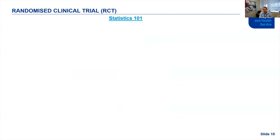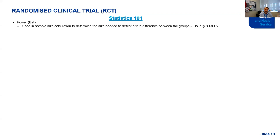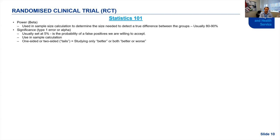Moving briefly to statistics 101, because RCTs often present a plethora of different statistics and it's important for ethics committee members to have a general understanding. Power is used in sample size calculation to determine the true difference between groups — usually 80 to 90 percent. Significance, also called Type I error or alpha, is the amount of false positives you're willing to accept, also used in sample size calculation.